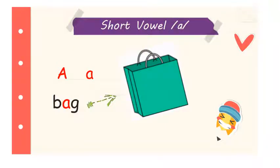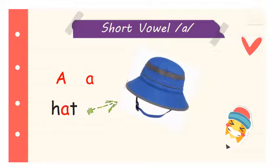Here we have a bag. Let's spell the word together: B, A, G — BAG. The middle sound of the word BAG is the short A sound. BAG. Now we have the word HAT. Let's spell it together: H, A, T — HAT. The middle sound of the word HAT is A, the short A sound. Let's move on.